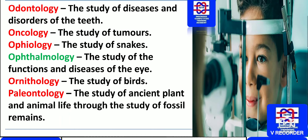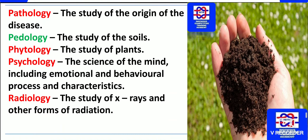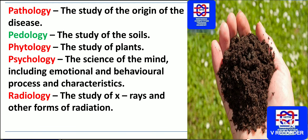Paleontology is the study of ancient plant and animal life through the study of fossil remains. Pathology is the study of the origin of disease — you have to meet the pathologist first, give a blood sample, and then you will be identified with whatever the diagnosis.